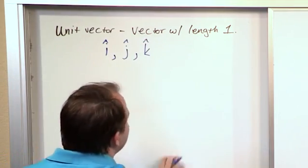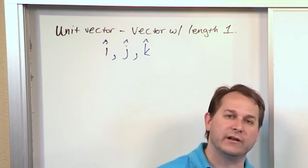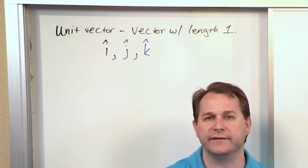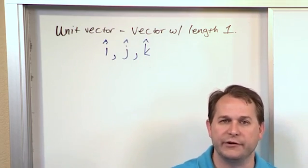And remember, I can draw in x, y, z axes, and I can show you that i-hat points along x, j-hat points along y, k-hat points along z. We need those to write down our Cartesian representation of a vector.